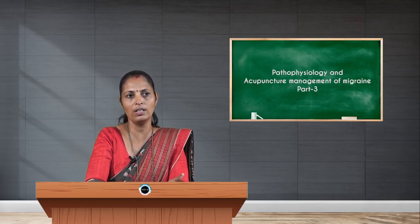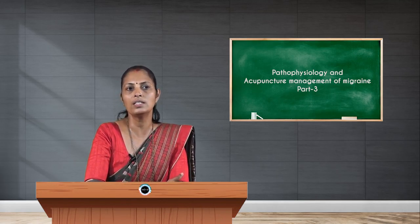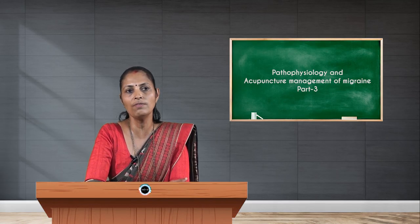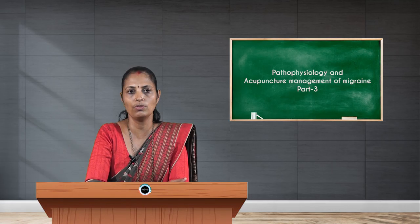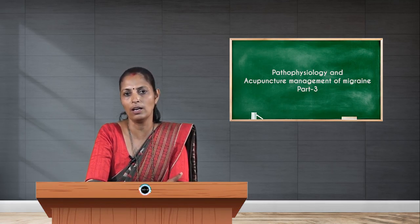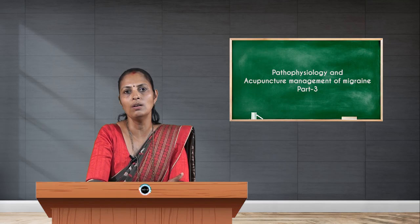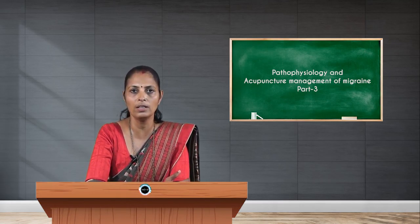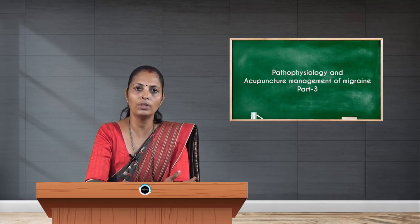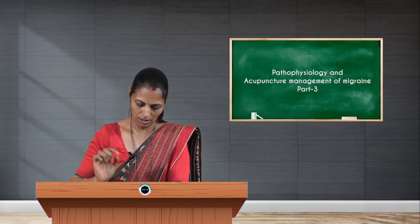GB 20 helps in descending the chi from the head, as there is stagnation. Taiyang helps to reduce the pain. For strong emotional involvement, we can use Pericardium 8, which is on the palm between the third and fourth metacarpal junction.